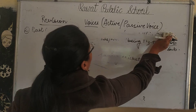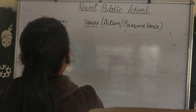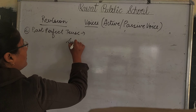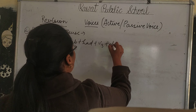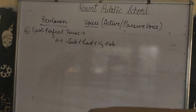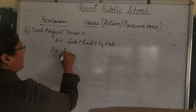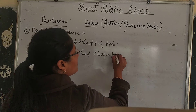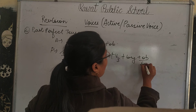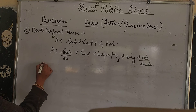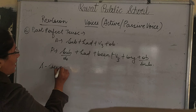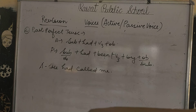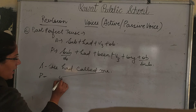The next tense is Past Perfect. In past perfect passive, after 'had been' comes the third form of the verb, then 'by', and the object becomes your subject. For example: 'He had called me.' To change this to passive, we take the object 'me' and make it the subject.